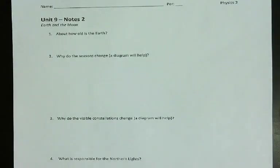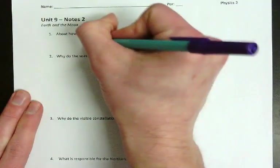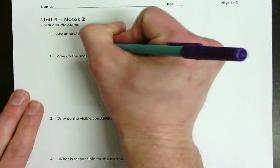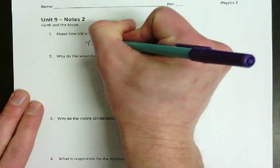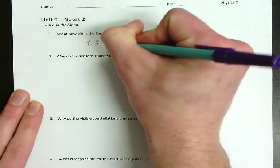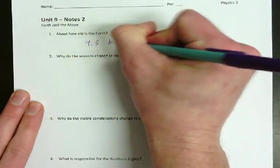What is the age of the earth? How old is it? It is about 4.5 billion years old.